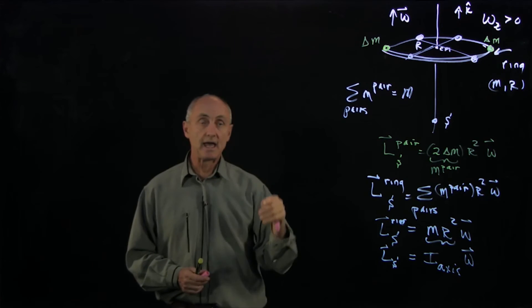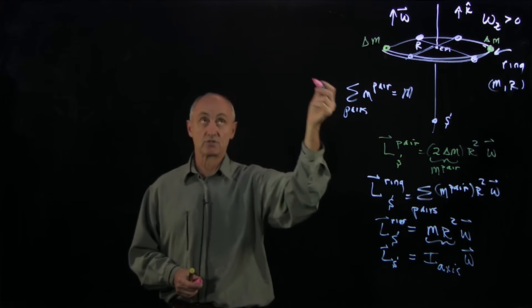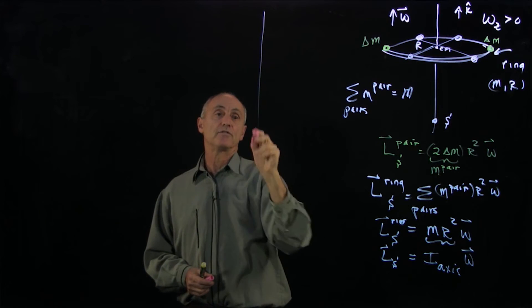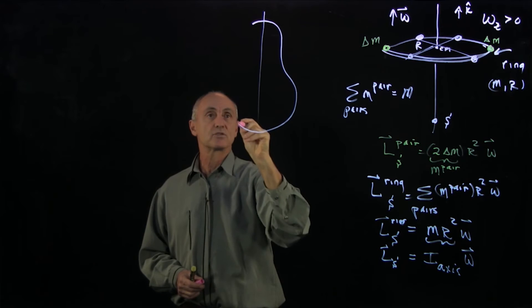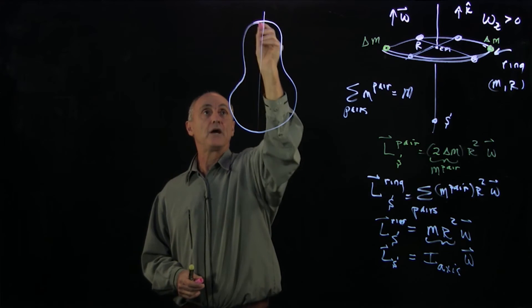What if we had an extended symmetric object? And let's see if I can possibly draw something like that. And so we'll draw a pear-shaped object.